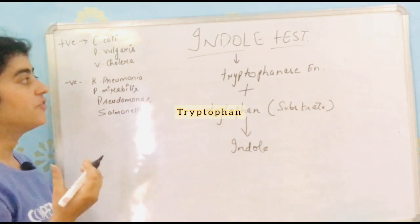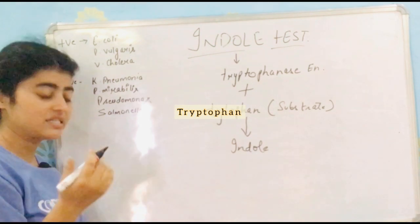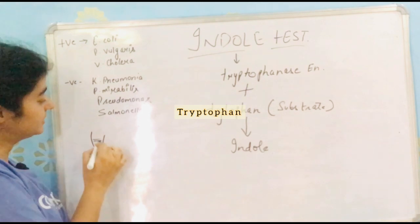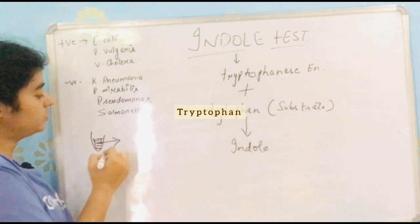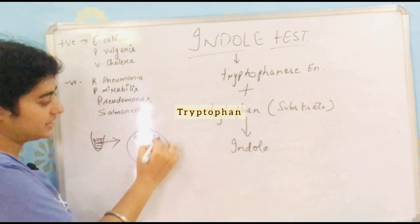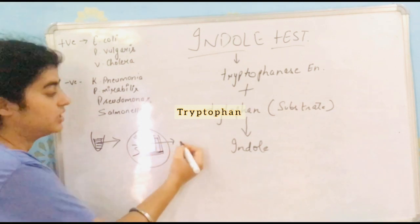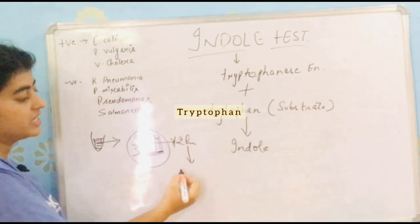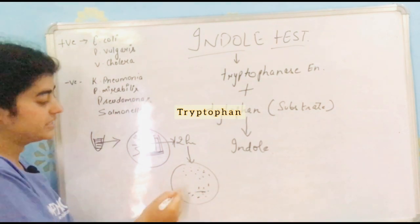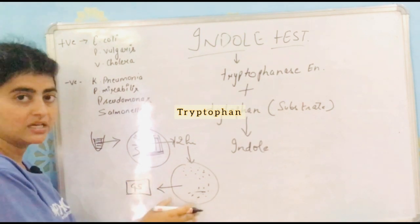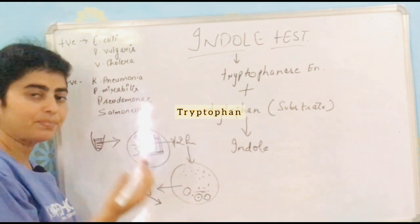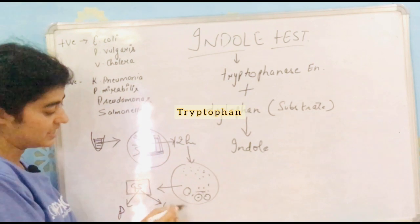Now let's discuss how the indole test is performed. Starting from receiving a specimen in the laboratory — for example, a urine sample — you streak it onto a petri plate and incubate it for 12 to 24 hours. After incubation, there will be colony formation on the petri plate. The first step is to perform gram staining on the colony to determine whether the bacteria is gram positive or gram negative.